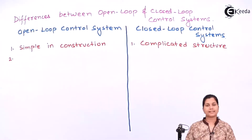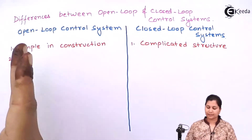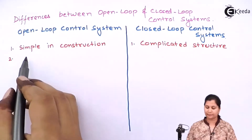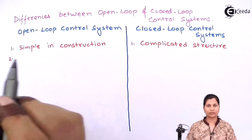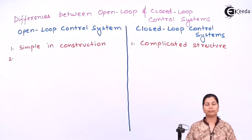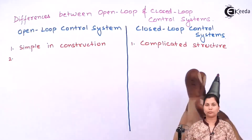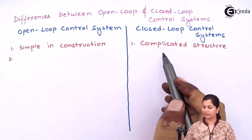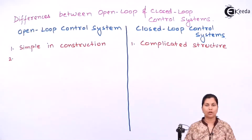The second difference is that, as the open loop control system is simple in construction, the maintenance of the system is very easy. Whereas the closed loop control system, as it has a complicated structure, its maintenance is difficult.